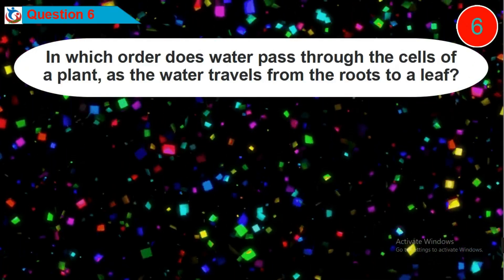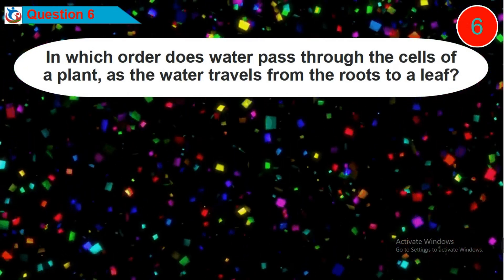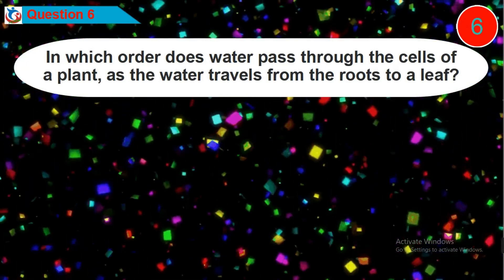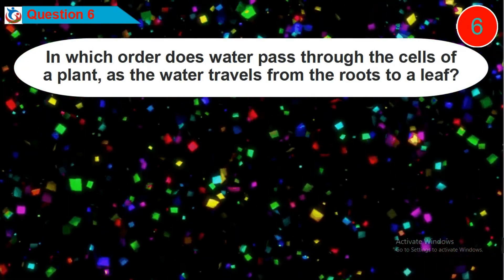Question 6. In which order does water pass through the cells of a plant as the water travels from the roots to a leaf?